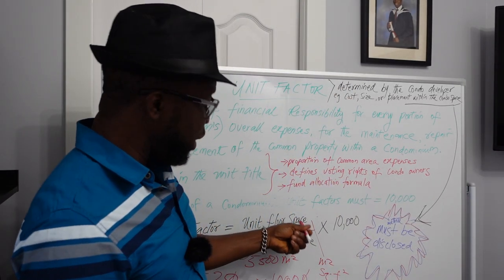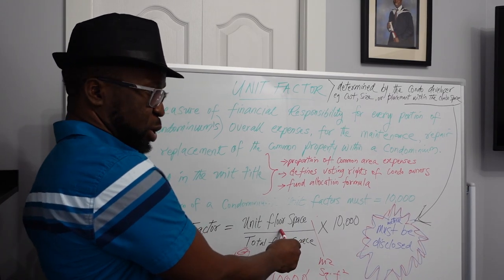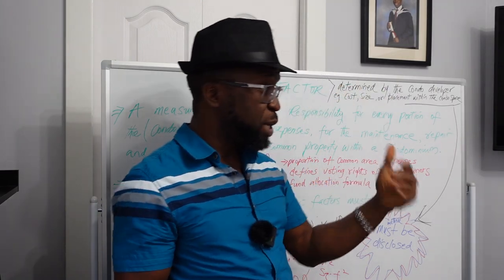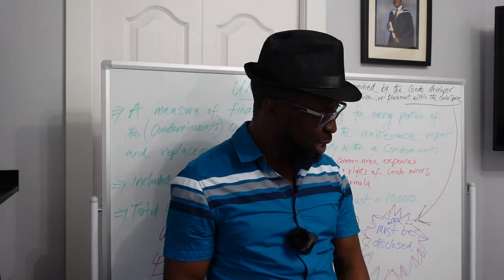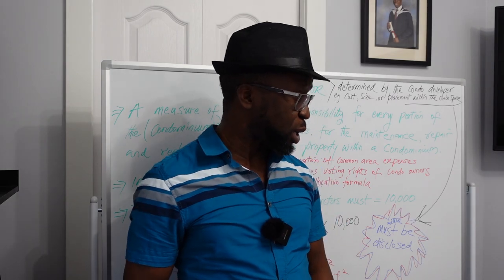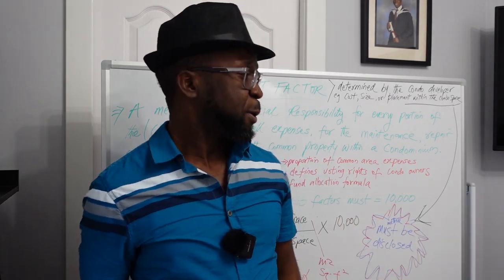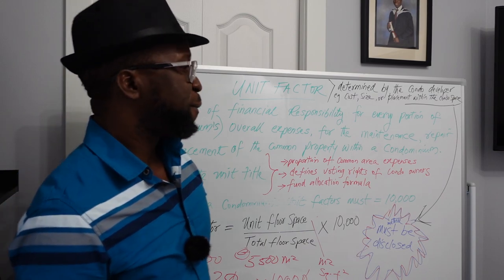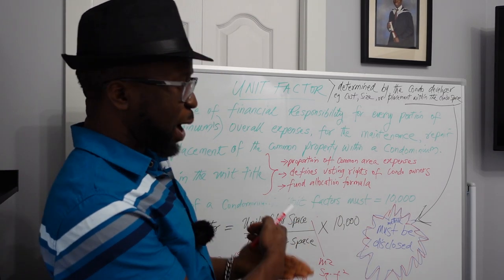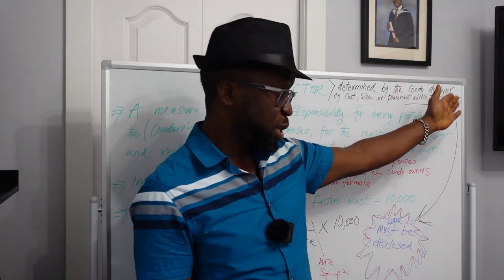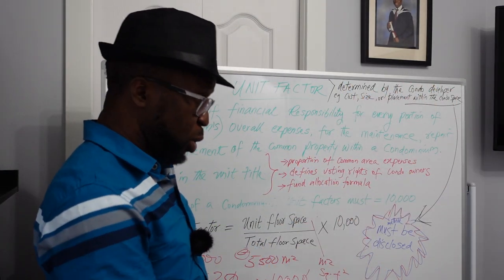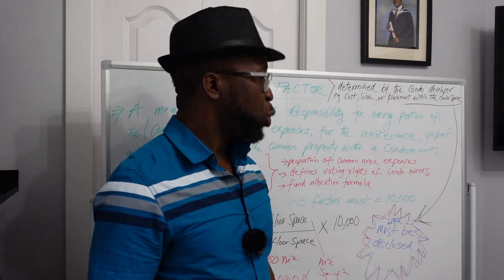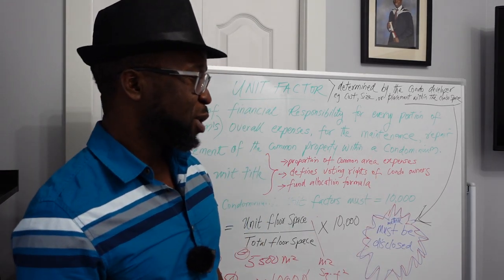Whether it's floor space or construction cost, they will tell you the method. The formula remains the same. Whatever the developer is required to disclose will be in the condominium documents, and from there you will be able to determine what is required of you.